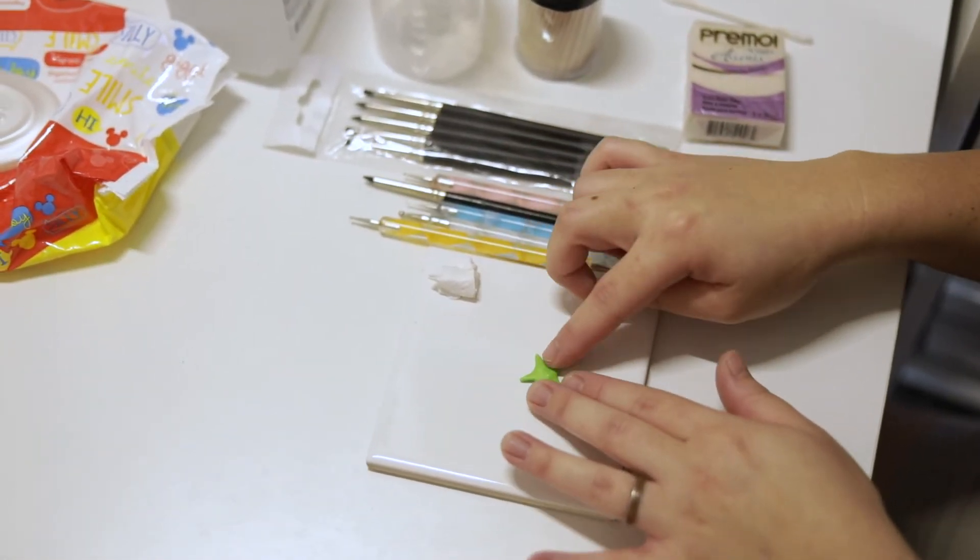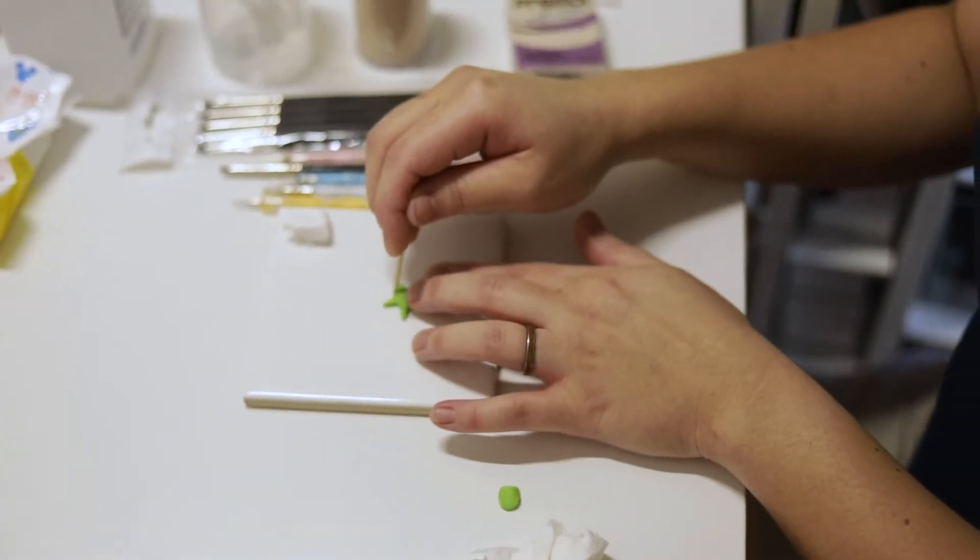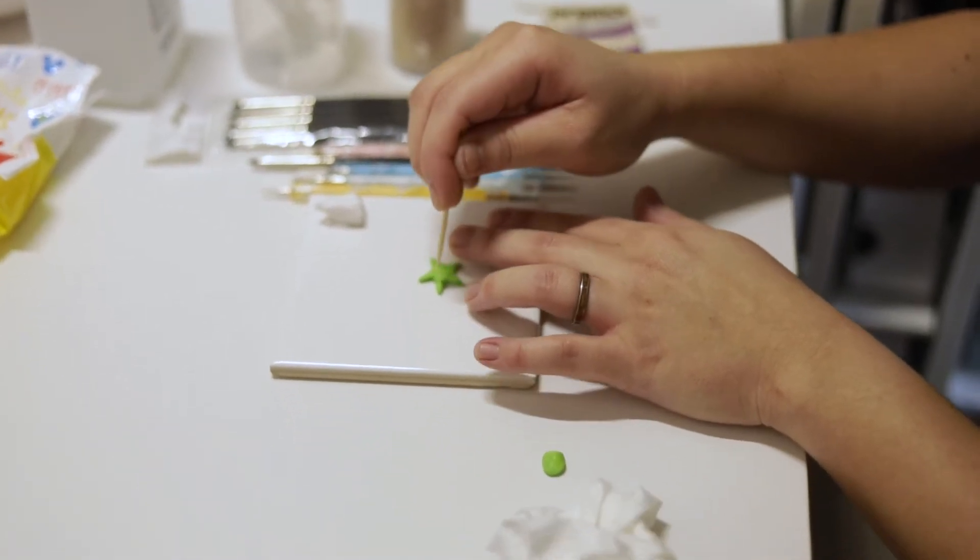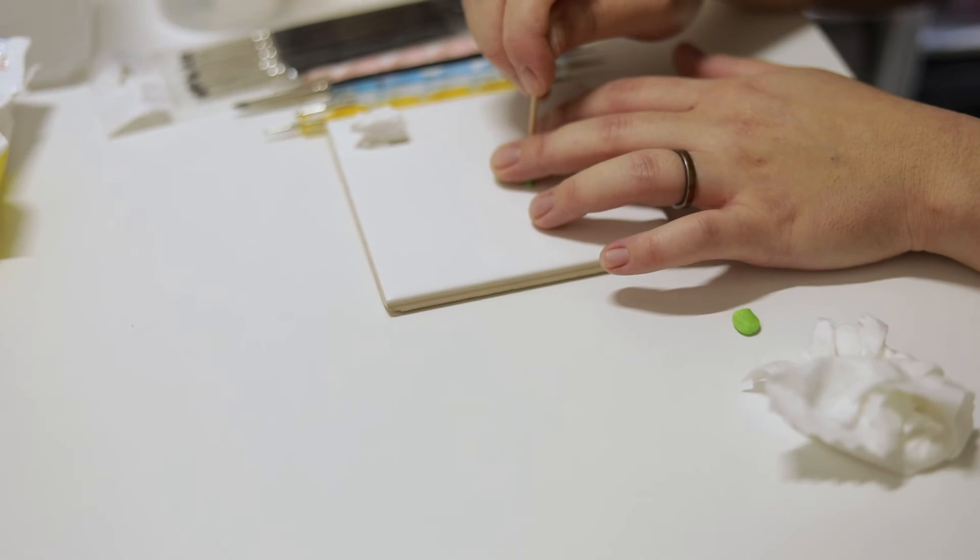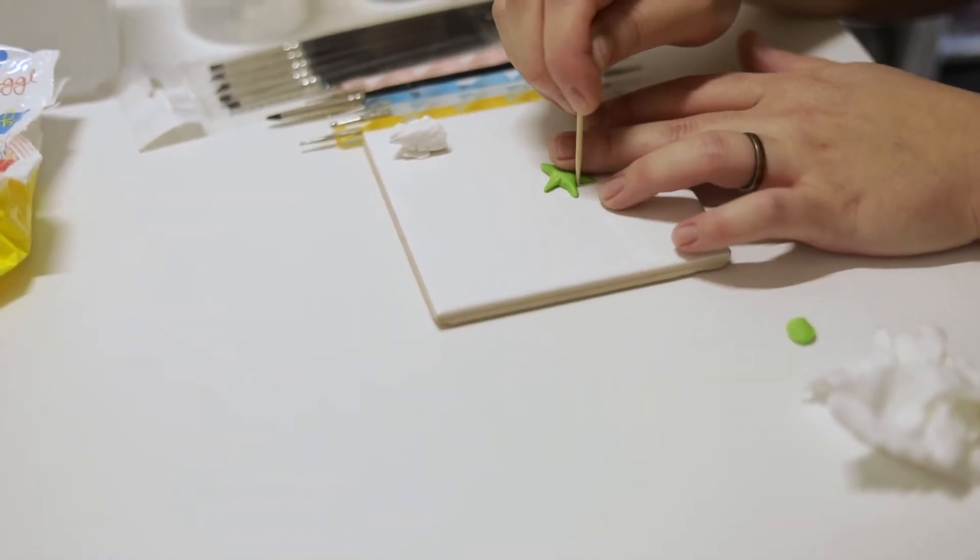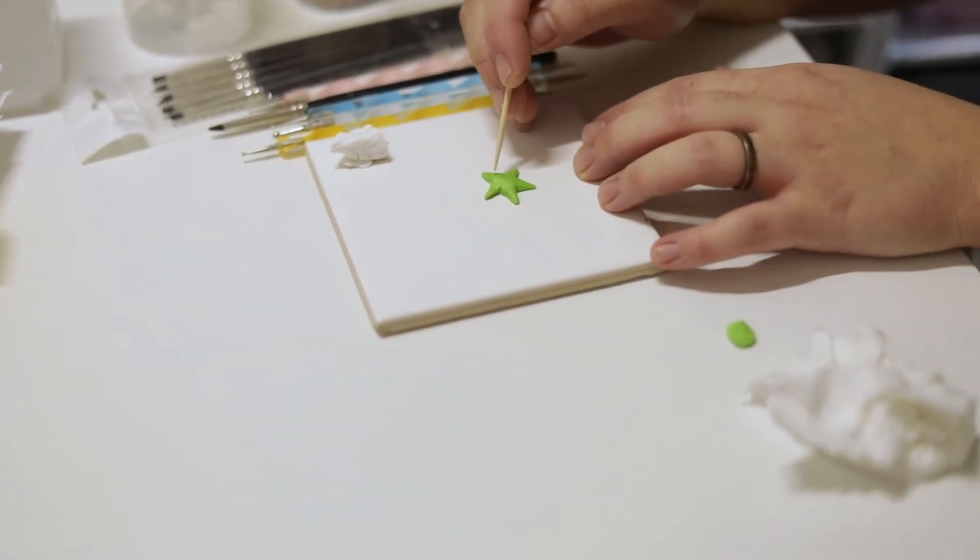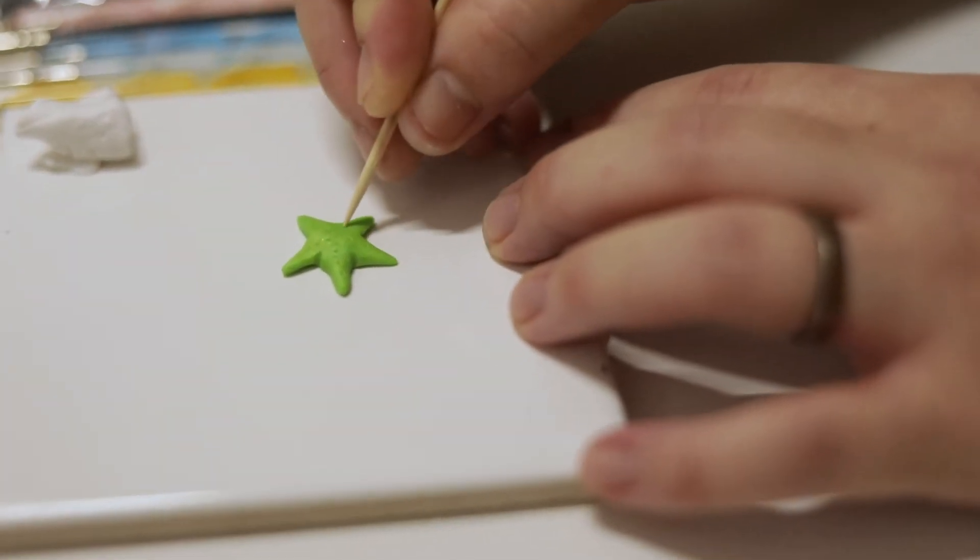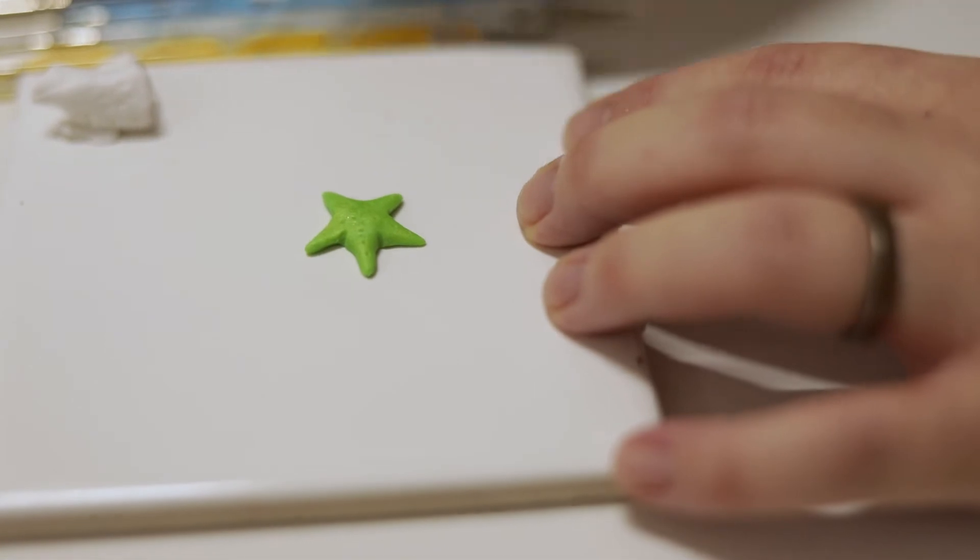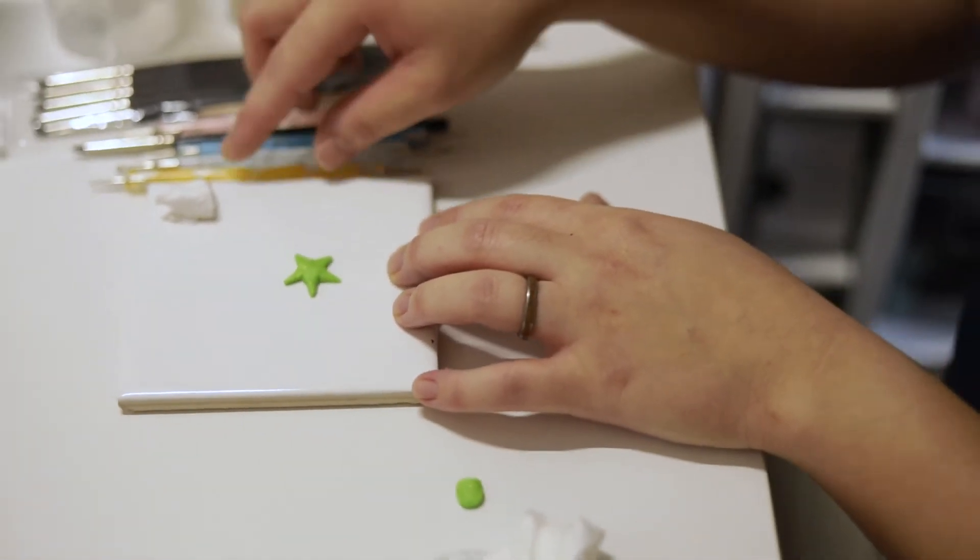I'm pretty happy with that shape right there. Using the toothpick, we can pull the little edges in just a little bit so it has a little bit more of a defined star shape. I'm actually going to start making a little bit of texture, like the starfish texture. I will also use the dotting tools.